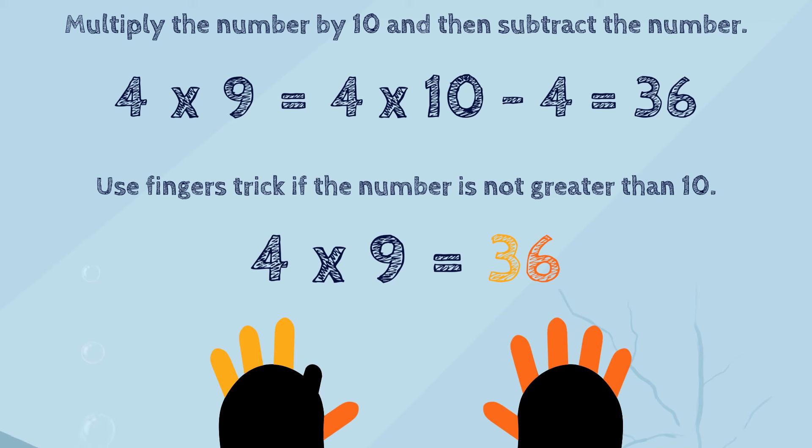As always, you should remember that the order in which you multiply the numbers does not change the answer, so it doesn't matter if the 9 is the first or the second number in the problem. The tricks work either way.